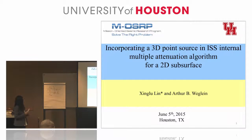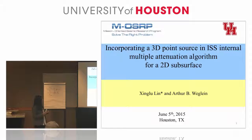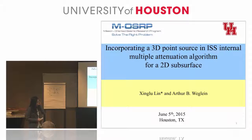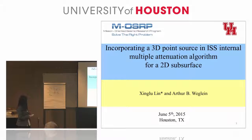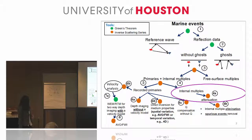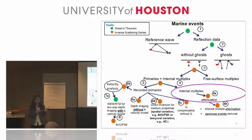In this presentation, I will introduce how to incorporate a 3D point source in our SS internal multiple attenuation algorithm for a 2D subsurface, as a continual work from last year. Last year we incorporated it for a 1D subsurface. This project, different from the project we showed in the previous presentation, focuses on the internal multiple attenuation algorithm.